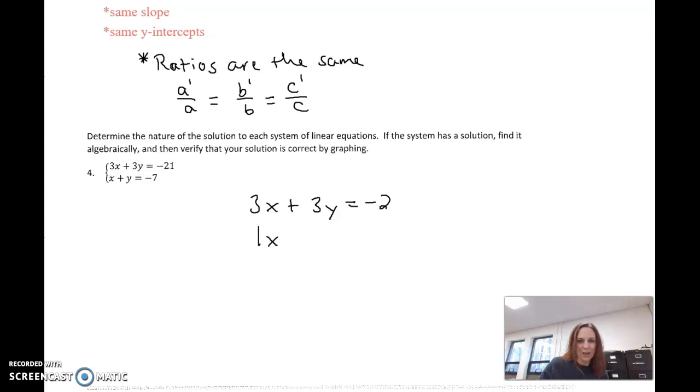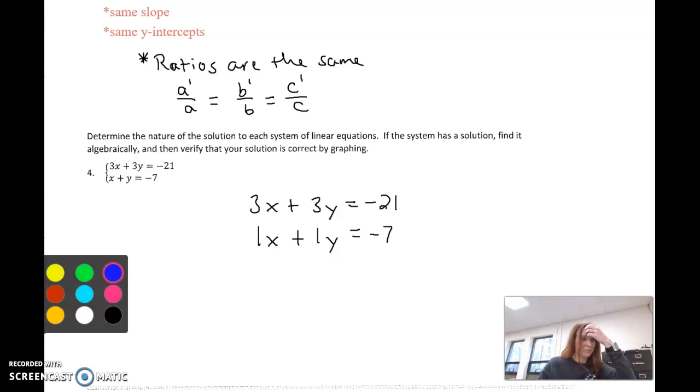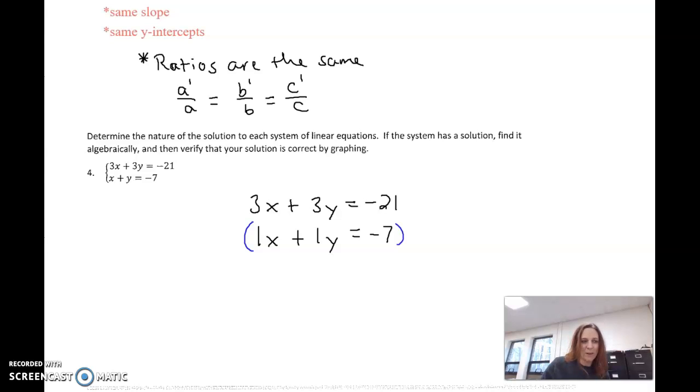And if we look at the coefficients of our x and of our y, you should see that there's a relationship here. If I take this bottom one here and I multiply it by 3, I get 3x plus 3 times 1y is 3y equals 3 times negative 7 is a negative 21. Do you see how it's the exact same thing as this one?